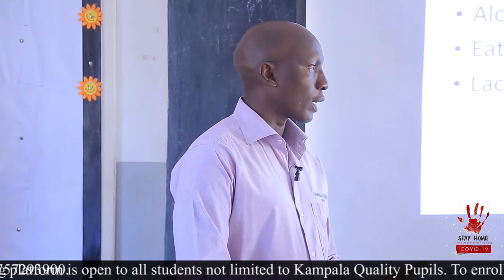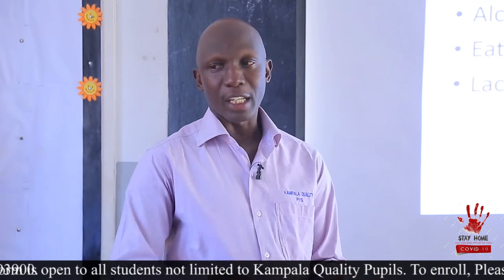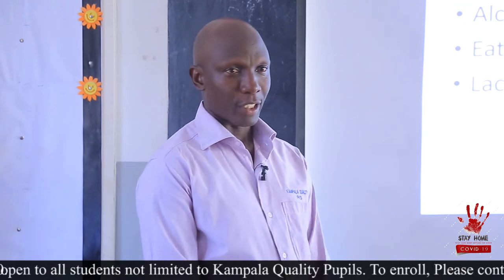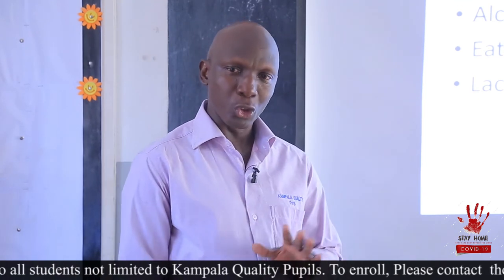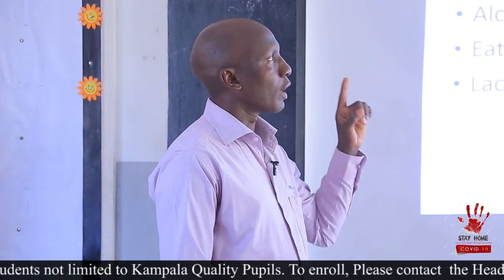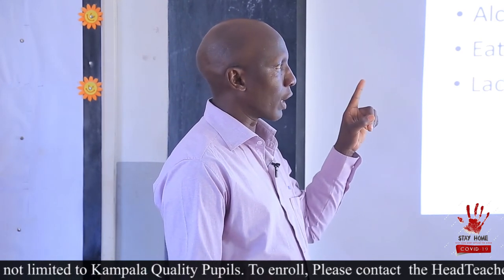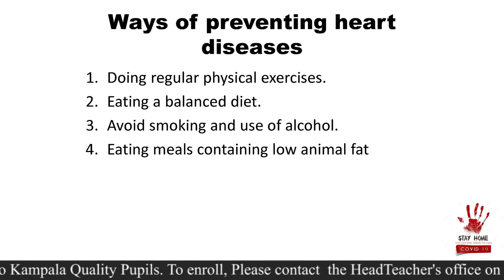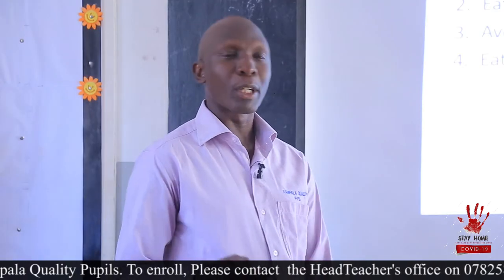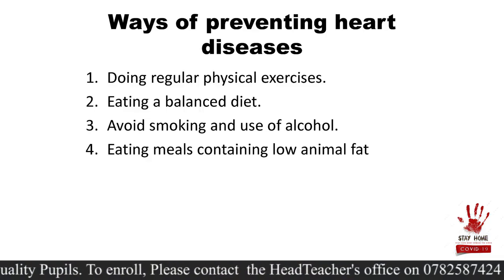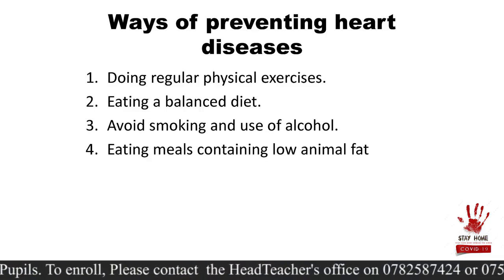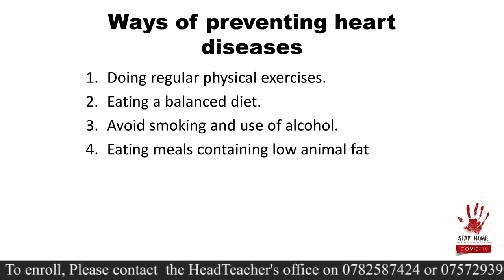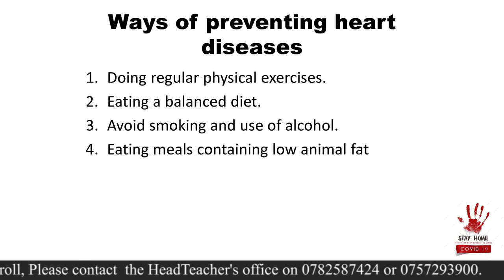Let's go back — we talked about heart attack, heart stroke, heart failure, and hypertension. If you don't want to get any of those diseases, here is what you need to do: do regular physical body exercise to make your heart muscles strong so they can pump blood properly. Eat a balanced diet. Avoid smoking and alcohol. Eat meals containing low animal fats, and you won't get any of these diseases.